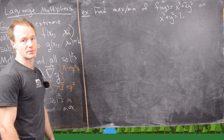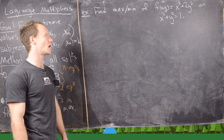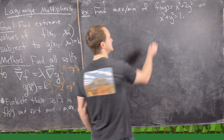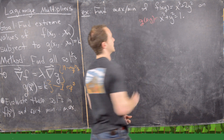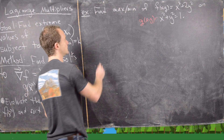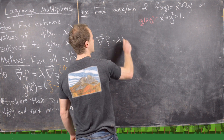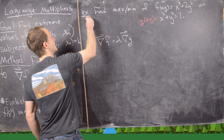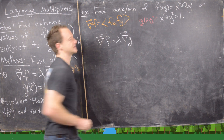Let's look at an example. We want to find the max and min of f of xy equals x squared plus 2y squared on the unit circle, so x squared plus y squared equals 1. That function is playing the role of g of xy. With only two variables this should be straightforward. We need the gradient of f to equal lambda times the gradient of g. Recall that the gradient of f is the vector of partial derivatives.